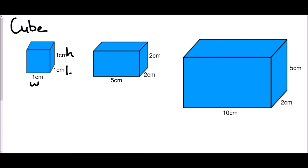As we move on to the second shape, two of the dimensions are the same, so this face here is a square, but we have a different length along the width. The width being different means that this is no longer a cube but a cuboid.